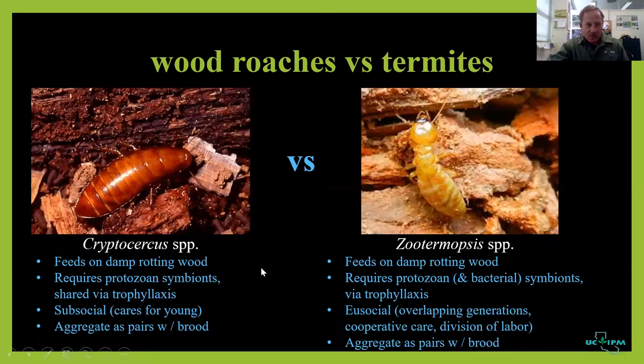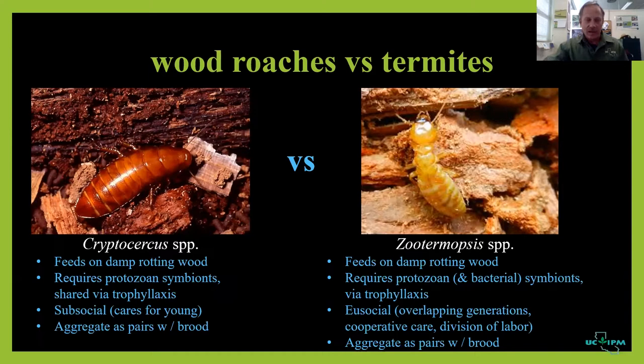Cryptocercus actually cares for its young. Most cockroaches leave an egg case (ootheca) somewhere and go about their business, leaving nymphs to fend for themselves. With Cryptocercus, there's actual parental care and you can find aggregations of cockroaches and their nymphs if you tear apart logs in the Appalachian Mountains.